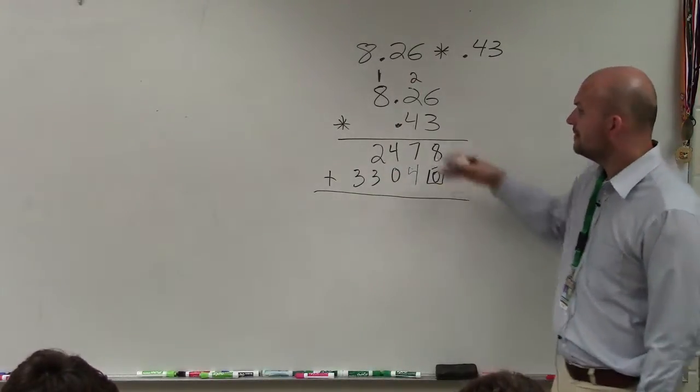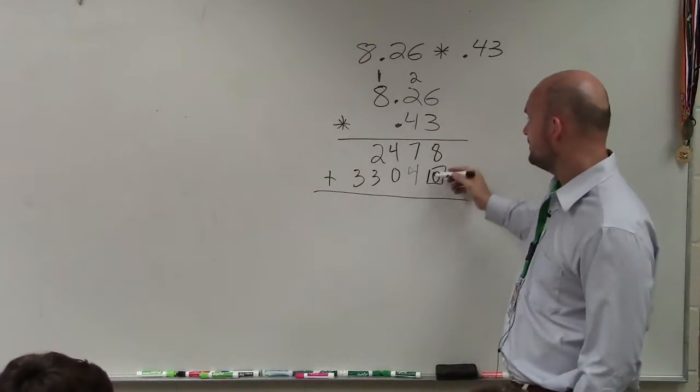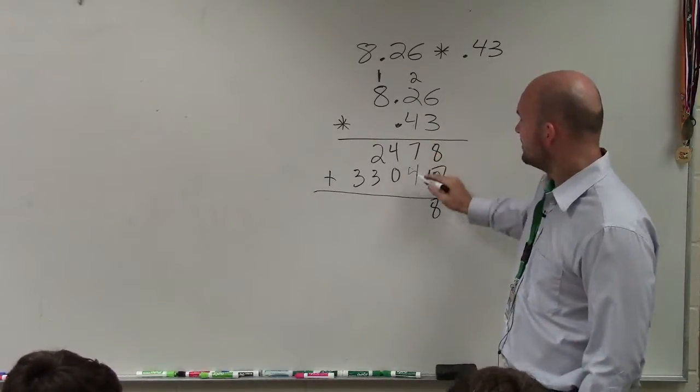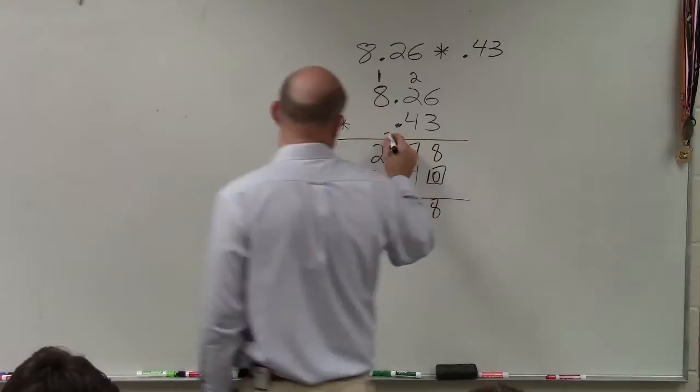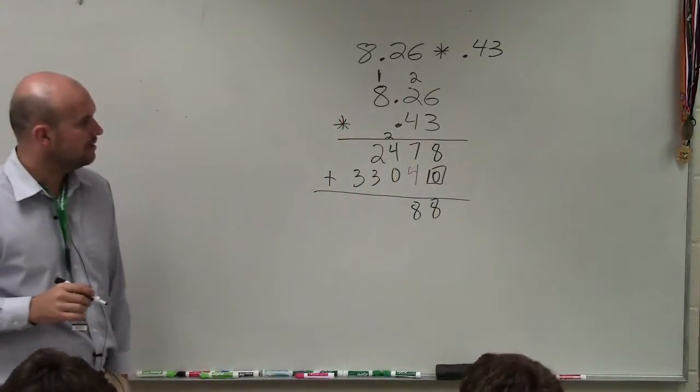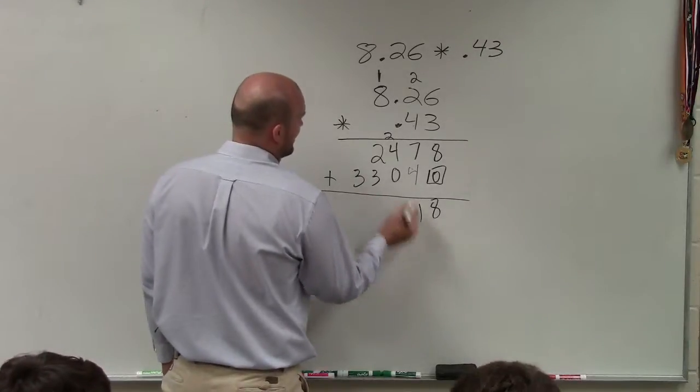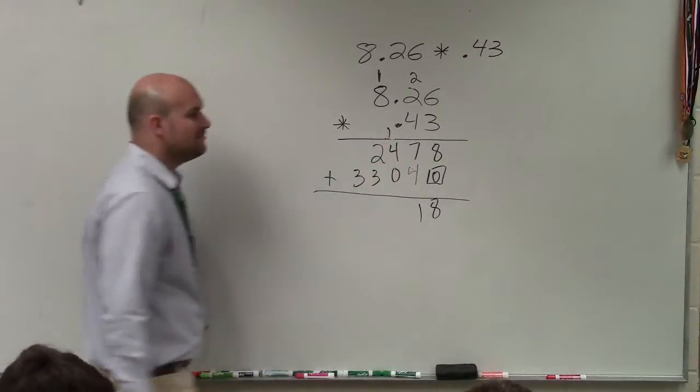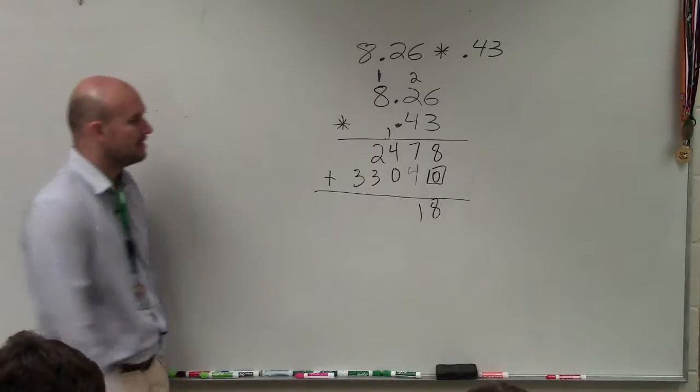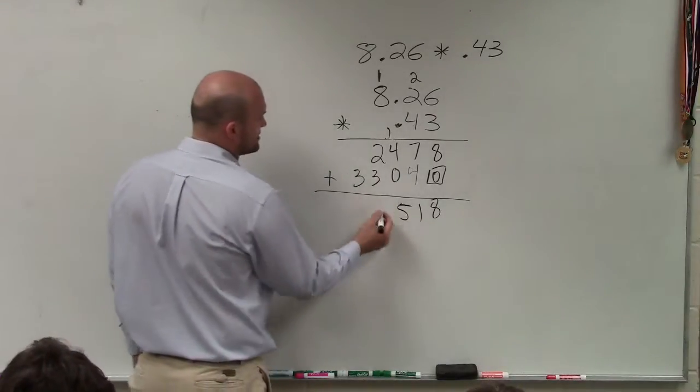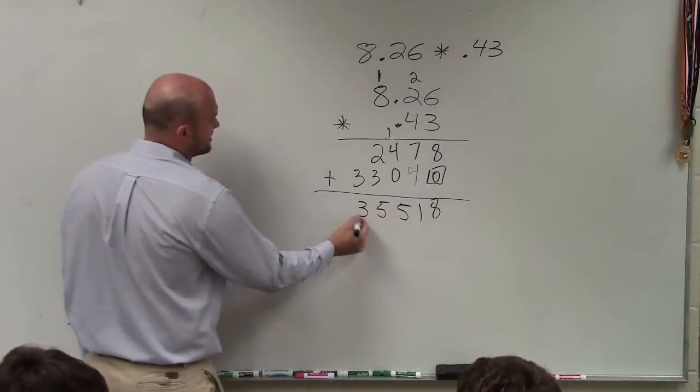It's going to be a little bit different. Now we just add vertically. 8 plus 0 is 8. 7 plus 4 is... 7 plus 4 is 11. Thank you. I was getting back into my math, into my multiplying. 7 plus 4 is 11, 1 plus 4 is 5. 2 plus 3 is 5, and then bring down the 3.